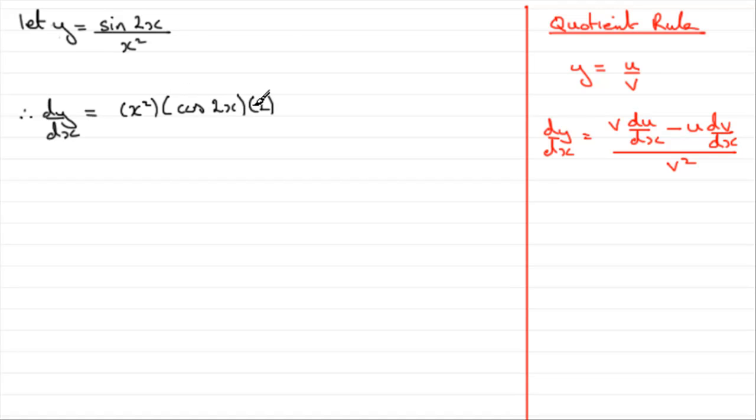So we get that, that's the first part here, v du dx. Then we have minus u dv dx, the top of the fraction times the differential of the bottom of the fraction. Top of the fraction, sine 2x, make sure you put this in brackets to save writing ambiguous statements. Times it by the differential of x squared, which is 2x.